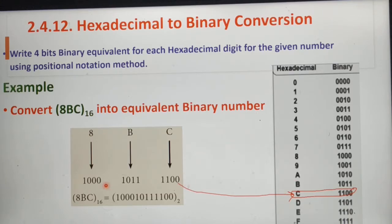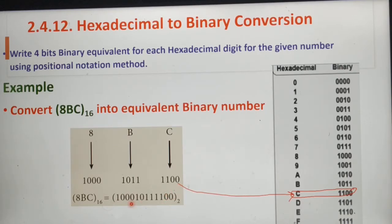Finally, we have to write all binary digits together to the base 2. We write 1000 then 1011 and 1100 to the base 2. This is our final binary number for our hexadecimal number 8BC to the base 16.